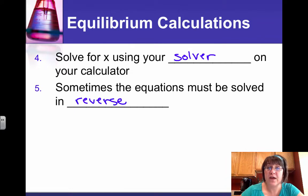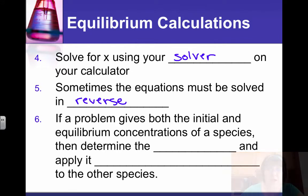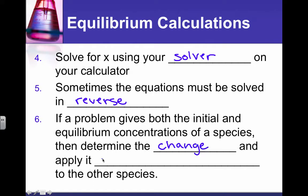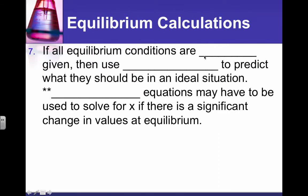Sometimes the equations have to be solved in reverse, so be patient and work it through, think through every situation on its own and decide what's the best placement for x in our rice table. If a problem gives us both the initial and the equilibrium concentrations, then they've made it easy for us. We determine the amount of change from one to the other and apply it stoichiometrically to all the other species.